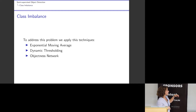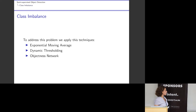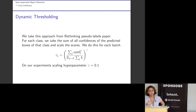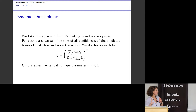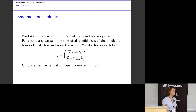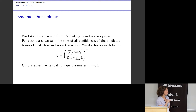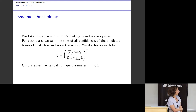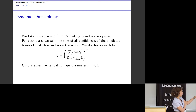One of these techniques is dynamic thresholding and an objectness network. For dynamic thresholding, we take this approach from the FlexMatch pseudo-label paper, refine it, and apply it to our algorithm. For each batch, we compute the mean of confidences for a class, and our threshold for that class is set accordingly. We scale those thresholds by a gamma hyperparameter.